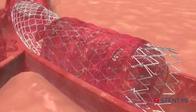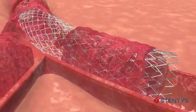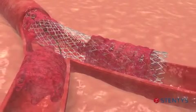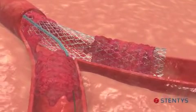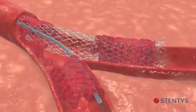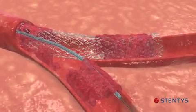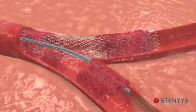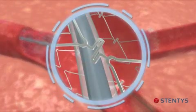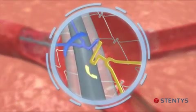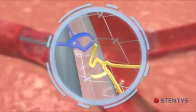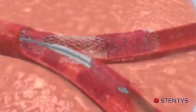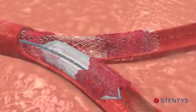If the Stentis stent is deployed across a significant side branch, and if access or treatment of the side branch is desired, a guide wire and a balloon are advanced through the stent mesh and into the ostium of the side branch, as would be done with a conventional stent. Rather than deforming the conventional stent struts, the balloon inflation gently separates Stentis' proprietary connectors at low pressure, thanks to a combination of flexion and rotation. This allows the free mesh to expand outward.